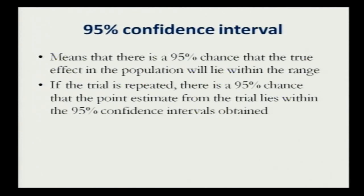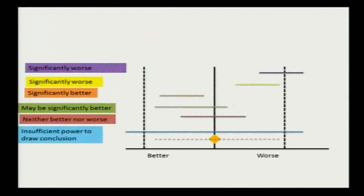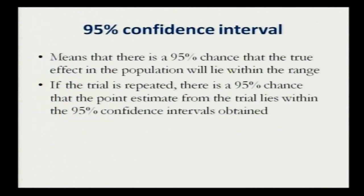Regarding 95% confidence intervals: this basically means there is a 95% chance that the true effect of the population will lie within this range. We are studying a sample and drawing inferences about the population. If the trial is repeated again and again, 95% of the time the point estimate or results of the study will lie within this range.